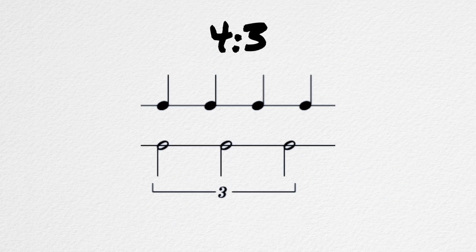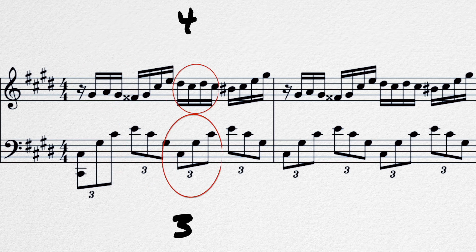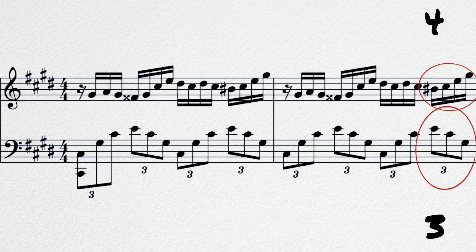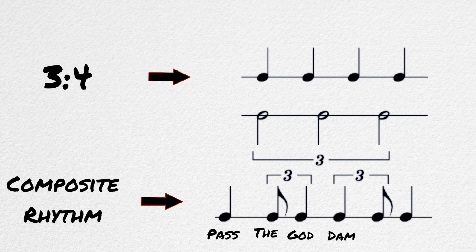The three against four, or the four against three, is the next most common polyrhythm. Chopin's Fantasy Impromptu is an excellent example of four against three. It's done so fast that it's hard to tell, but if you slow it way down, you'll be able to hear it. The composite rhythm for four against three is — and the mnemonic that can be used is: pass the goddamn butter.